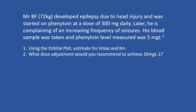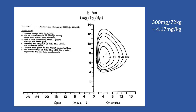In this question you will learn to use the orbital plot to estimate the patient's Vmax and Km. To put the information into the orbital plot, you need to convert the dosage into mg per kg per day. The patient is taking 300 mg divided by the body weight, which is approximately 4.2. The measured concentration is 5, so using these two points — 5 and 4.2 — draw a straight line.